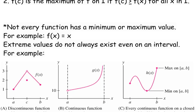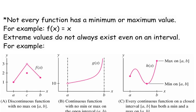Let's look at some examples of functions that don't necessarily have particular extreme values. This first function has a discontinuity at c. It does not have a maximum on this interval because, if that were not a hole, that would be the maximum. But we cannot identify the maximum because of this idea that we can get infinitely close to that point but we can't actually equal that point.